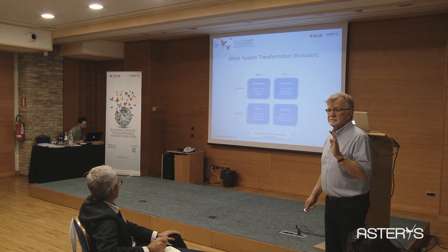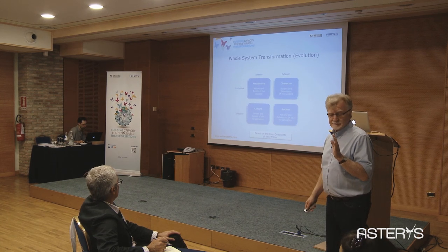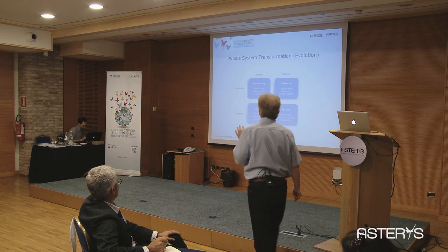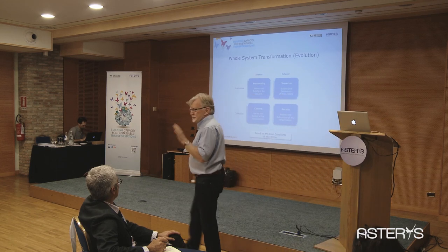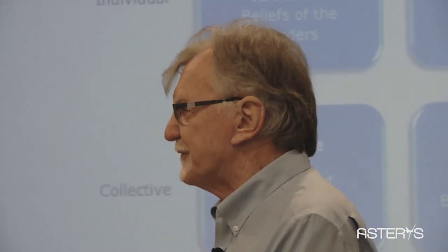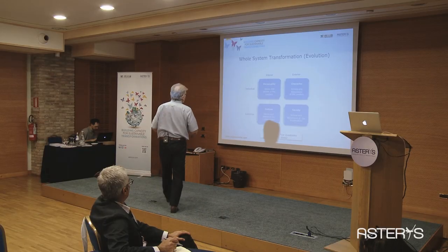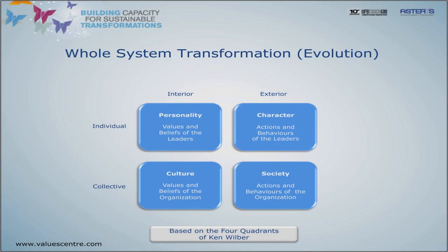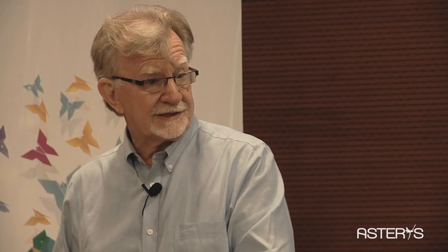Ken Wilber says that any human system — all human knowledge — can be defined in four ways: the interior of the individual, the exterior of the individual, the interior of the collective, and the exterior of the collective. So if you're talking about a nation or an organization, there's an internal part of the organization, an internal part of you, an external part of you, and an external part of the organization.